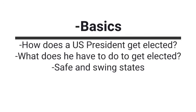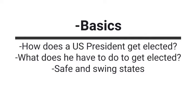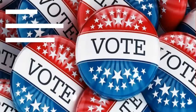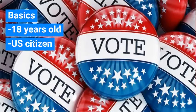We are going to talk about the basics: how does the US president get elected, what does he have to do to get elected, and safe and swing states. Let's start with the basics — you have to be at least 18 years old and a US citizen to be able to vote.